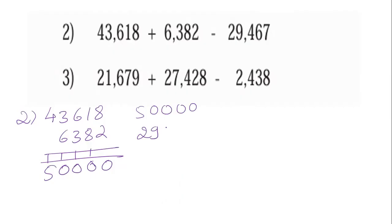50,000 minus 29,467. 0 minus 7 is not possible, borrow 10 from nearby house, it becomes 10. 10 minus 7 is 3, carry 1. 10 minus 7 is 3, carry 1. 10 minus 5 is 5, carry 1. 10 minus 10 is 0, carry 1. 5 minus 3 is 2. The answer is 20,533.